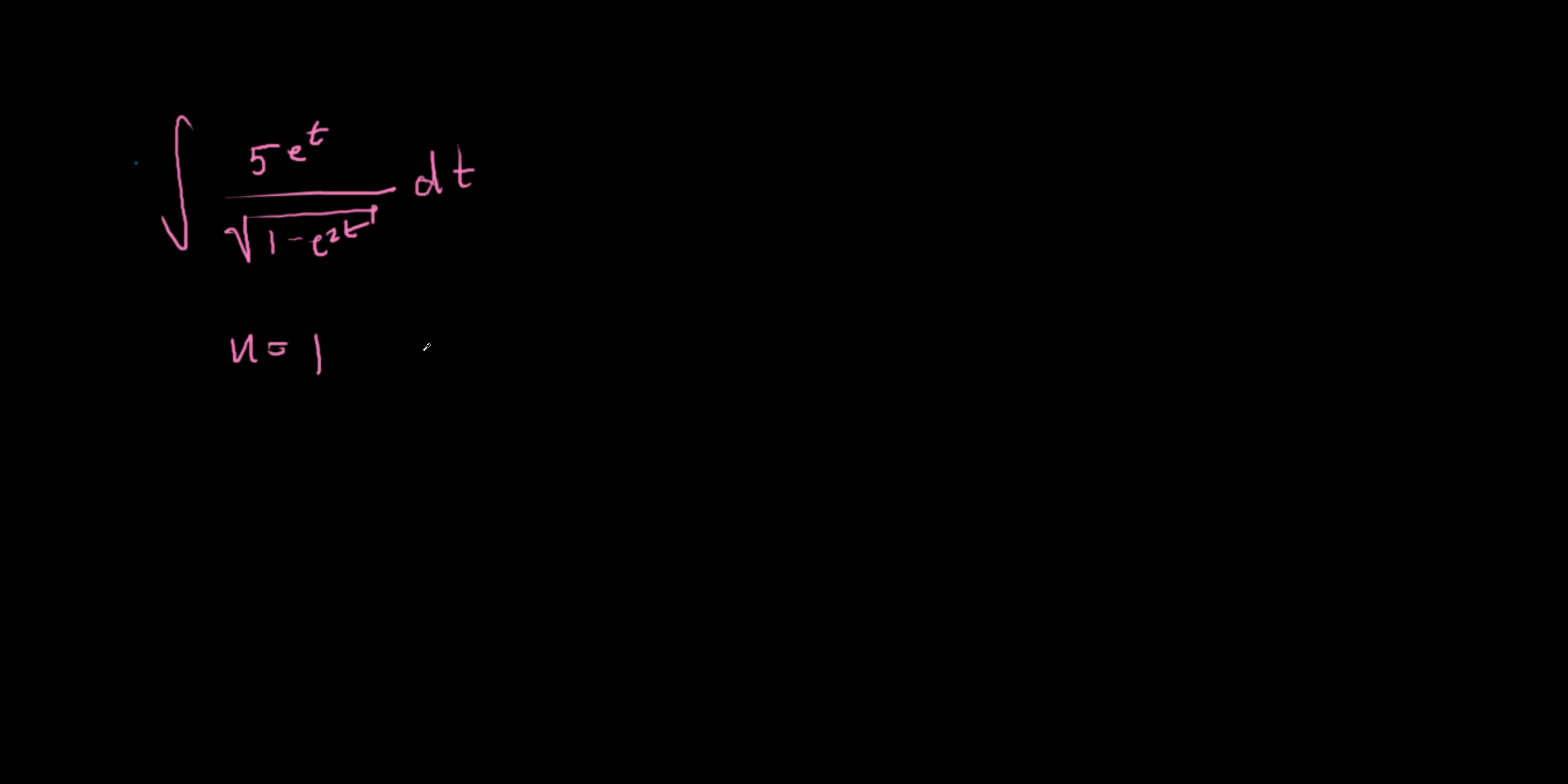So if you want to get rid of that, it's actually quite easy. If you let u equal e^t, then we see that du is just equal to the same thing as e^t dt, and now we can get rid of this entire top part of the integral.